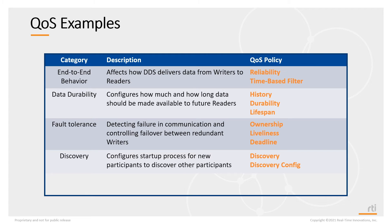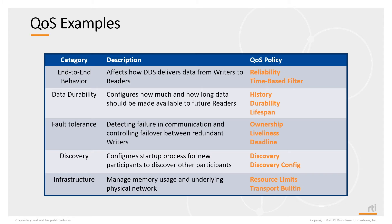Discovery: when two applications start up, they need to find out about each other — what data each sends and receives. This is something you can configure using the discovery or discovery config QoS policy. Infrastructure: how Connext DDS interacts with the local operating system, including memory allocation and access to network interfaces. Resource limits and transport built-in are a couple of QoS policies relevant here.